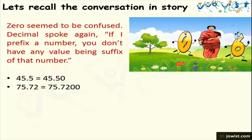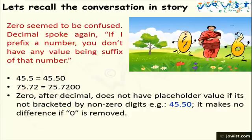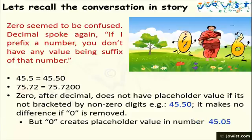Similarly, in the number 75.72 and 75.7200, these two numbers are equal and hence are called equivalent numbers as they represent the same amount. Zero after decimal does not have placeholder value if it's not bracketed by non-zero digits — for example, 45.50. It does not make any difference if zero is removed. But zero creates placeholder value in the number 45.05.